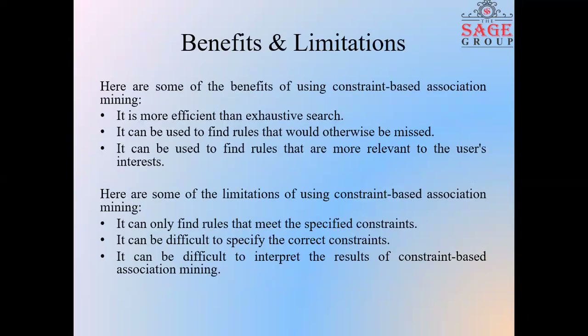Here are some benefits and limitations of Constraint-Based Association Mining. The benefits include: it is more efficient than exhaustive search; it can be used to find rules that would otherwise be missed; and it can be used to find rules that are more relevant to the user's interest.